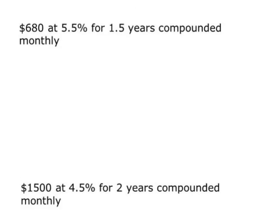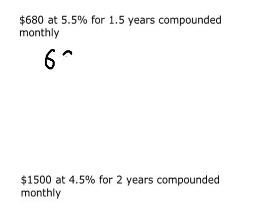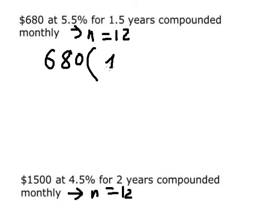The next one is about monthly compounding, so n equals 12. Similar for this one, I will put 5.5% over 12.